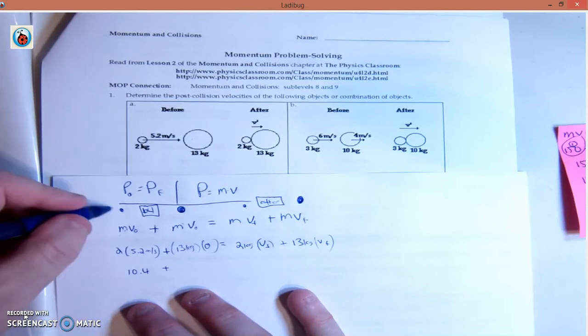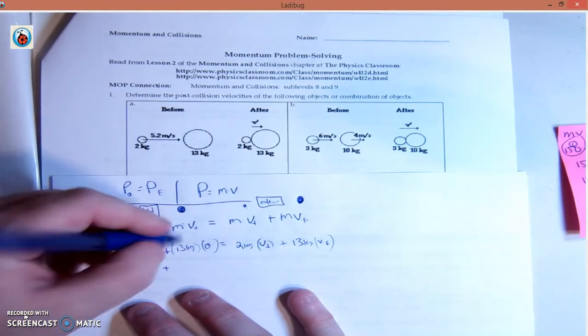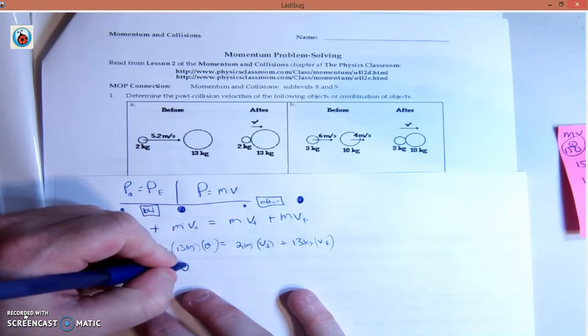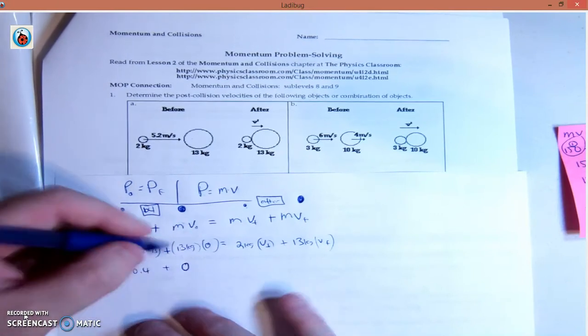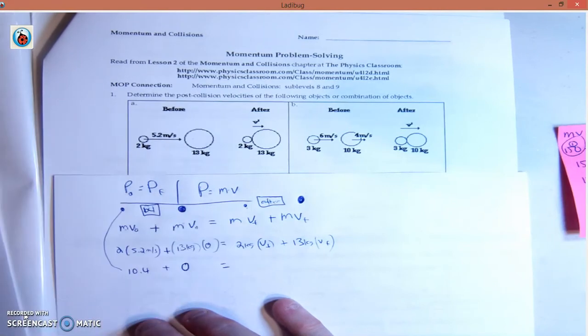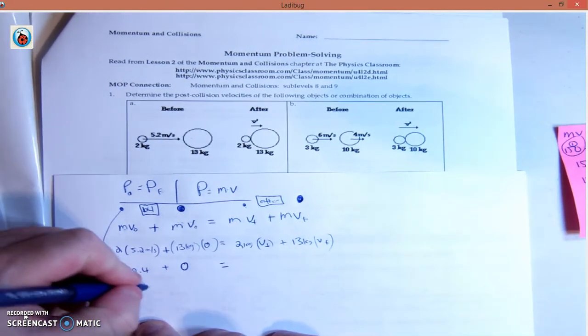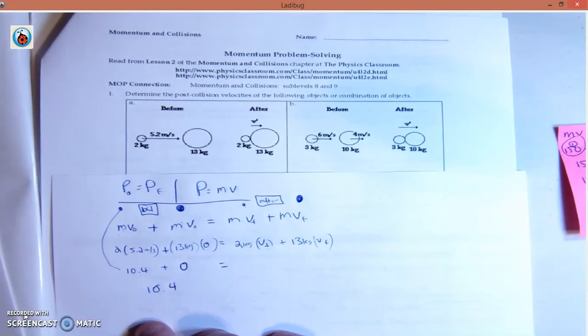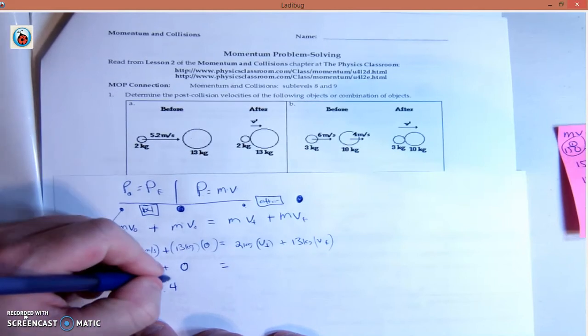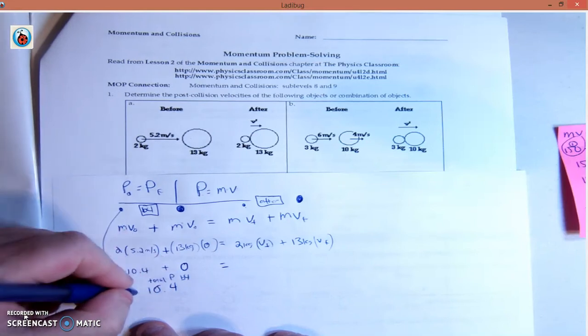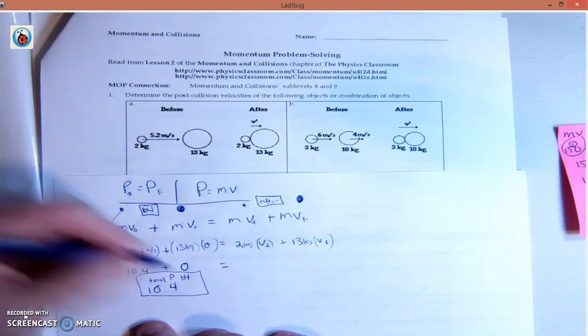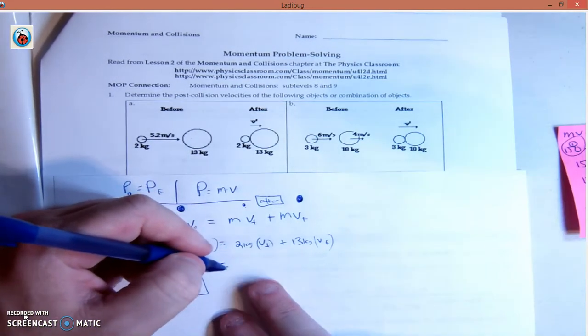Momentum. So this is the momentum of the small ball. And 13 times 0 is 0 because anything times 0 is 0. This plus this is 10.4. This is the total momentum before collision.